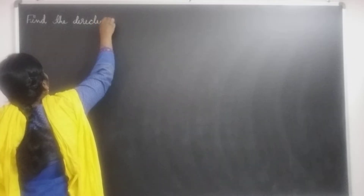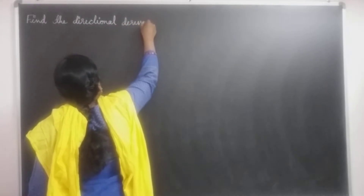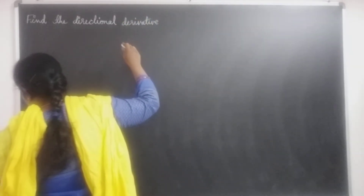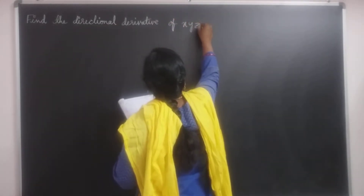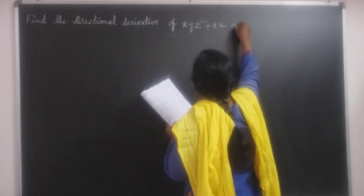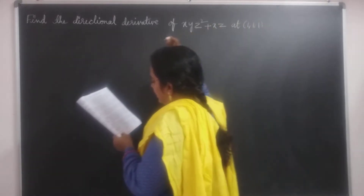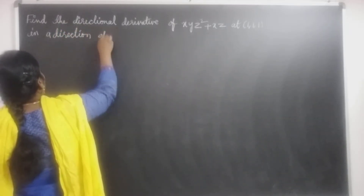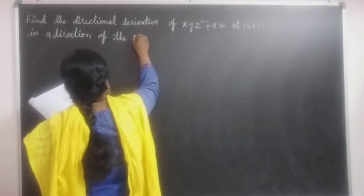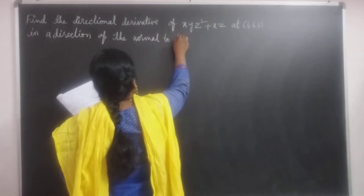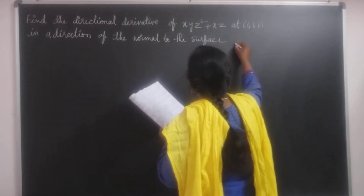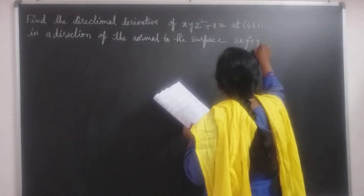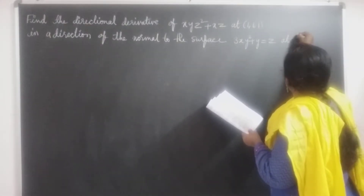The problem is: find the directional derivative of xyz² + xz at the point (1, 1, 1), in the direction of the normal to the surface 3xy² + y = z at the point (0, 1, 1).